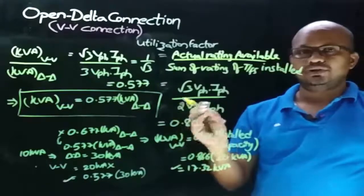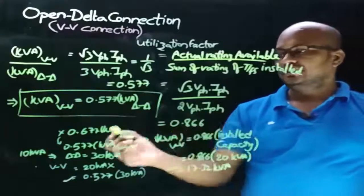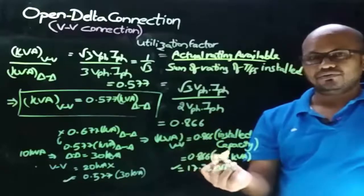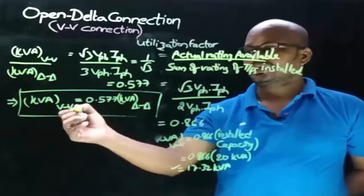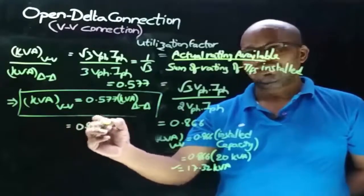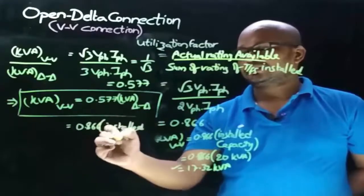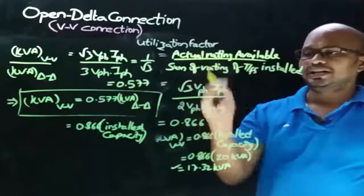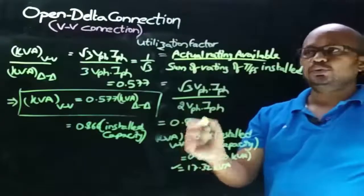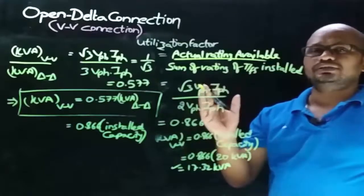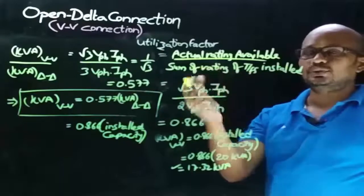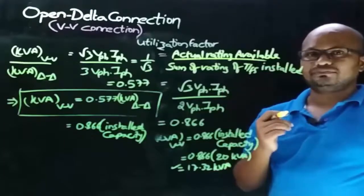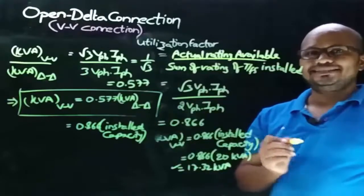So the KVA rating of open delta connection equals 0.866 times the installed capacity. This means the power delivered to the load can be taken as 57.7% of delta-delta connection rating, or 86.6% of the installed capacity. The utilization factor for open delta connection is 0.866, which is a poor utilization factor compared to Scott connection. Therefore, to transfer three-phase power with two transformers, Scott connection is preferred because it has a better utilization factor of 0.92.